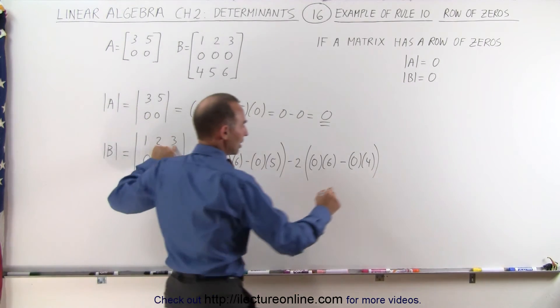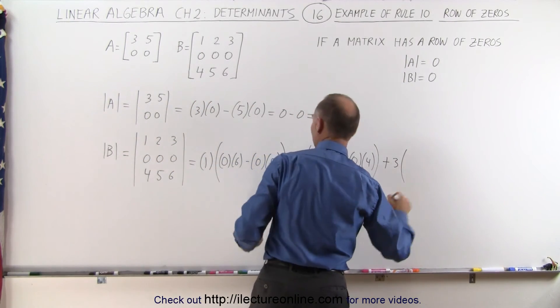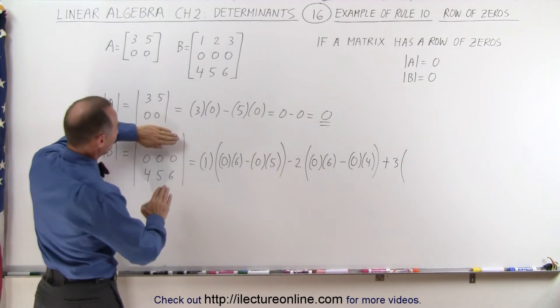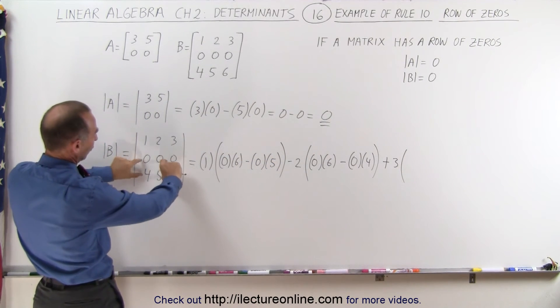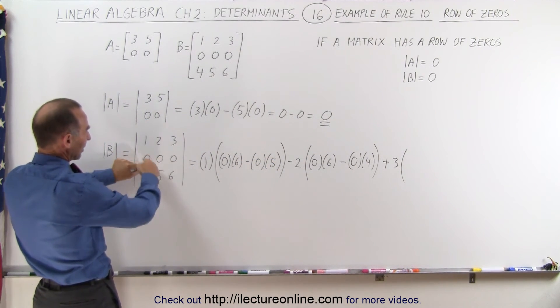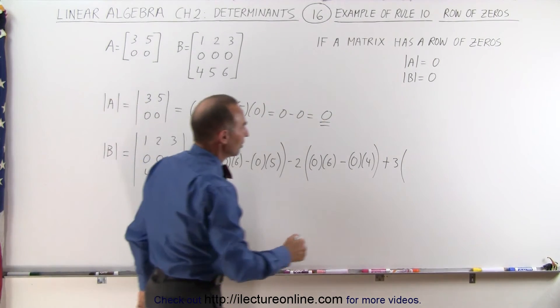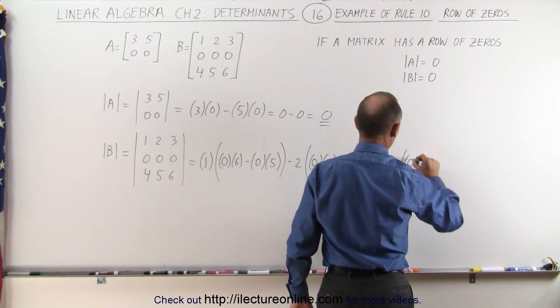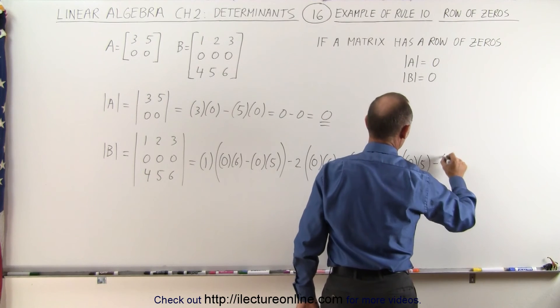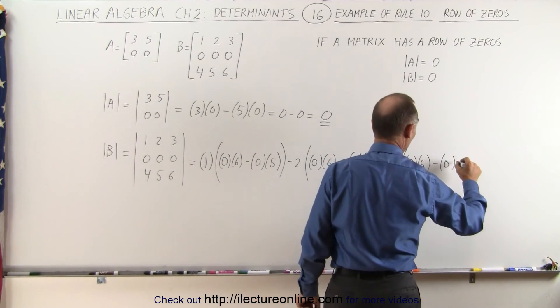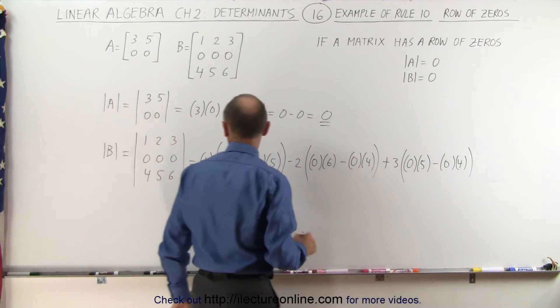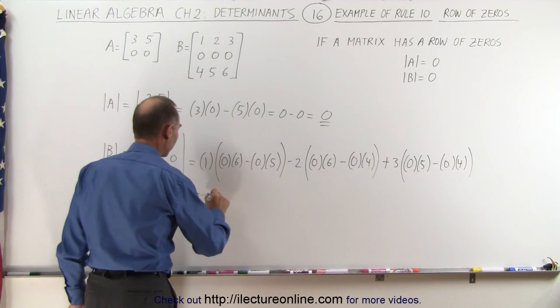And finally you take this element right here, 3, plus 3 times, you get rid of this row and this column, end up with those four elements, again you multiply these together minus those, you end up with 0 times 5 minus 0 times 4 and again that's equal to 0, so you can see here that this also equals 0.